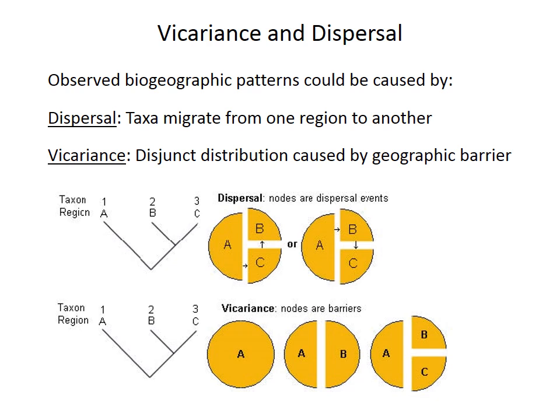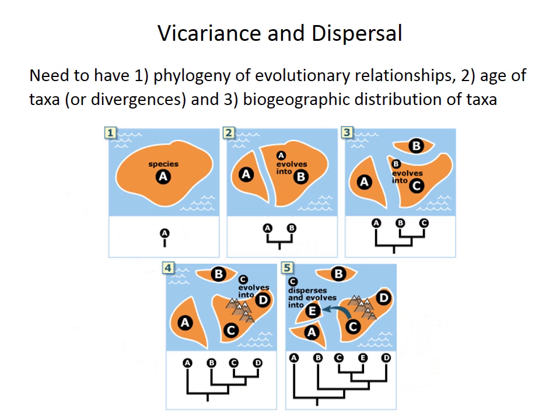So you clearly need more information to distinguish between these two scenarios. To test for vicariance or dispersal you need three things: a phylogeny, data on the age of the taxa or on the timing of the divergences (for example from biostratigraphy), and information about the distribution of the taxa at different time intervals. The key critical piece of information is the geographic distribution of the ancestral species.